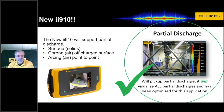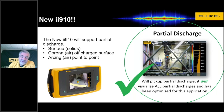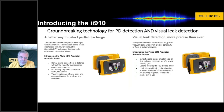So we went back to the drawing board and we now have a new product called an II910. It will support partial discharge — it has the ability to get to 100,000 hertz, so twice the frequency range, and we will definitely be able to see PD. At the same time, we increased the sensitivity of the actual microphones, and we can see smaller leaks even more precisely at a farther distance.